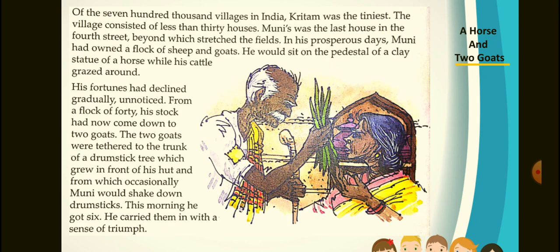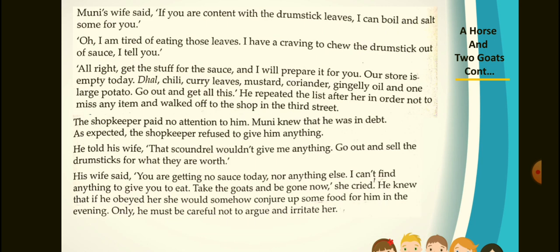This morning he got six drumsticks and carried them in. Muni's wife said, 'If you are content with the drumstick leaves, I can boil and salt some for you.' 'Oh, I am tired of eating those leaves. I have a craving to chew the drumstick out of sauce, I tell you.' 'Alright, get the stuff for the sauce and I will prepare it for you. Our store is empty today — dhal, chili, curry leaves, mustard, coriander, gingelly oil and one large potato. Go out and get all this.' He repeated the list after her in order not to miss any item and walked off to the shop in the third street.